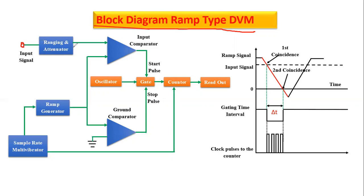Then there is a ranging and attenuator block. Whatever input signal we give here, the ranging and attenuator block brings it into a measurable range. For example, if our input is less than that, we can amplify it. And if the input signal is too large, we reduce it without distorting the waveform. So the input signal passes through the ranging and attenuator block so that our input is measured in a measurable range.